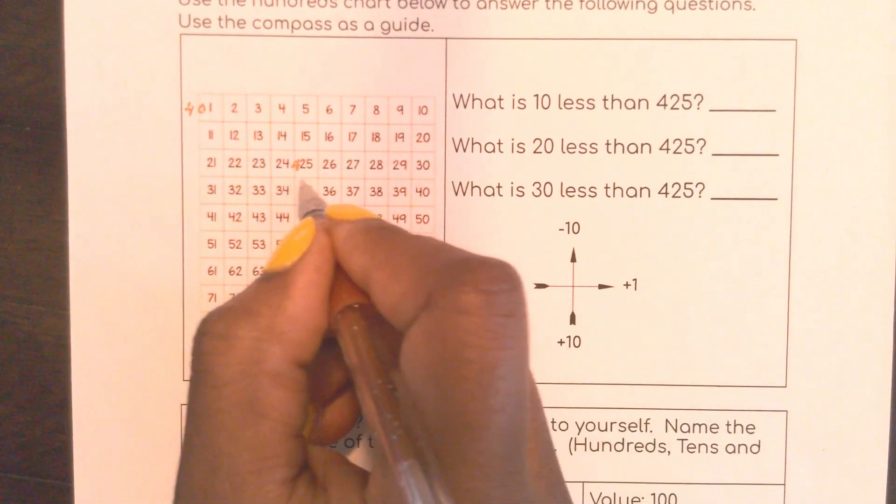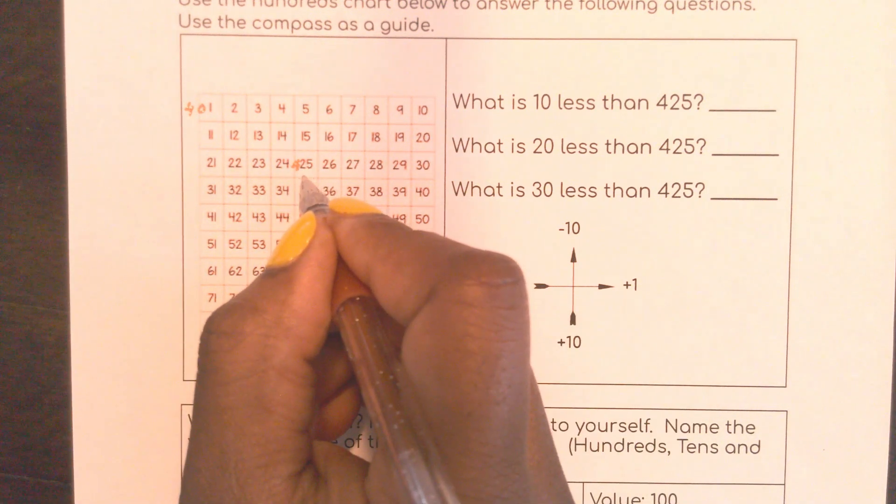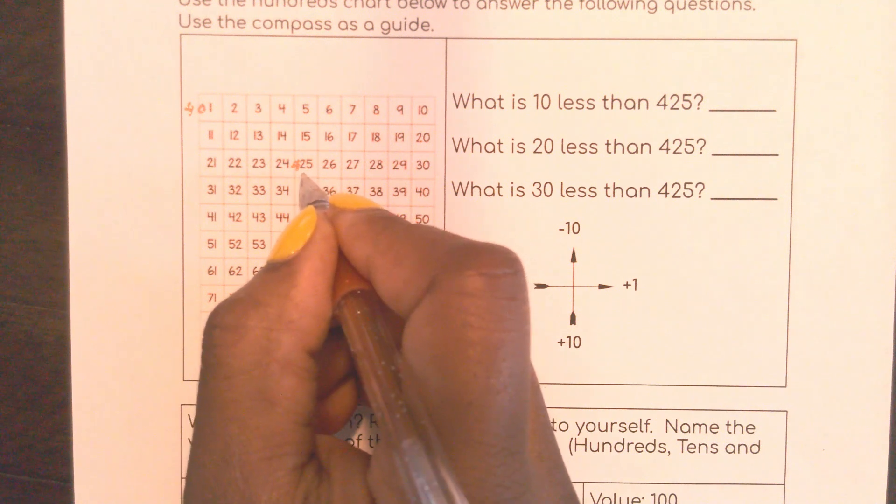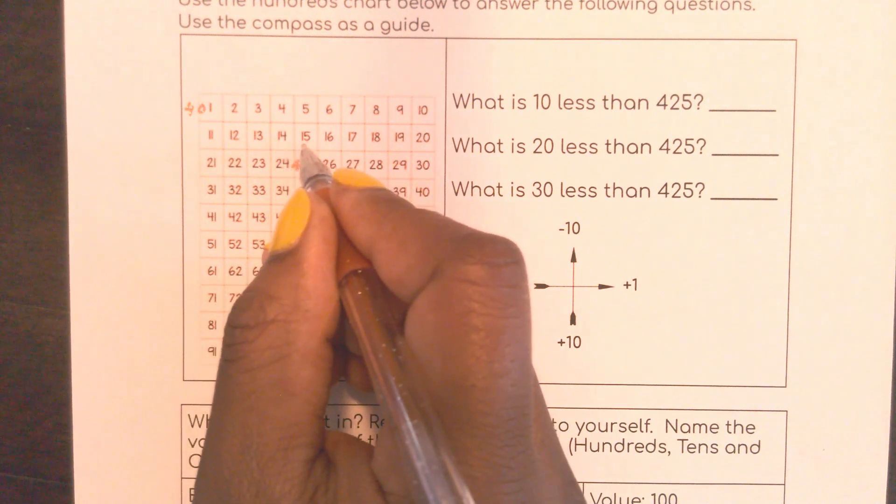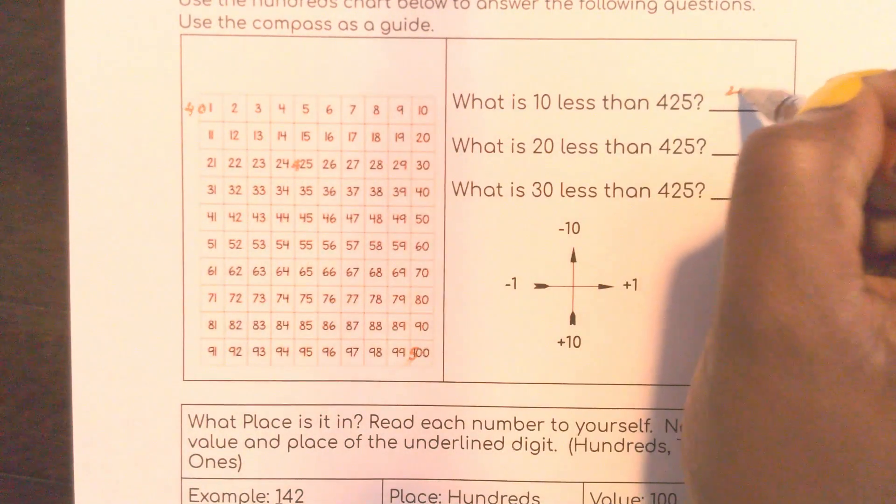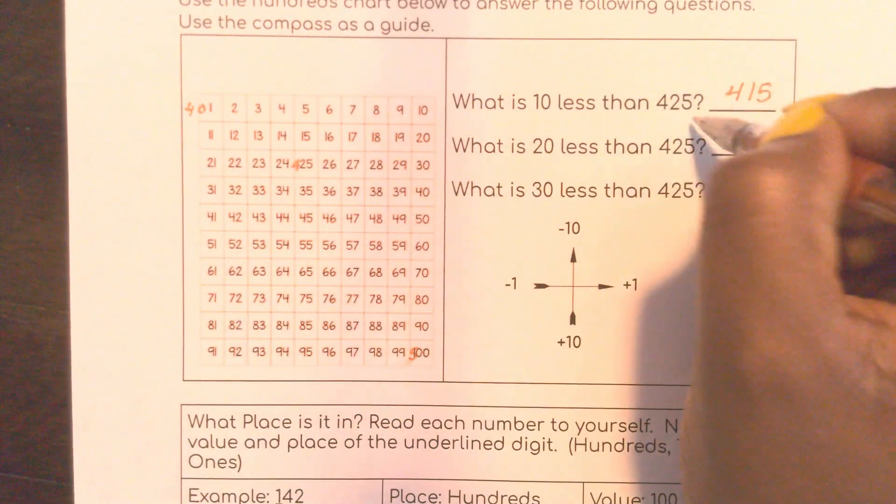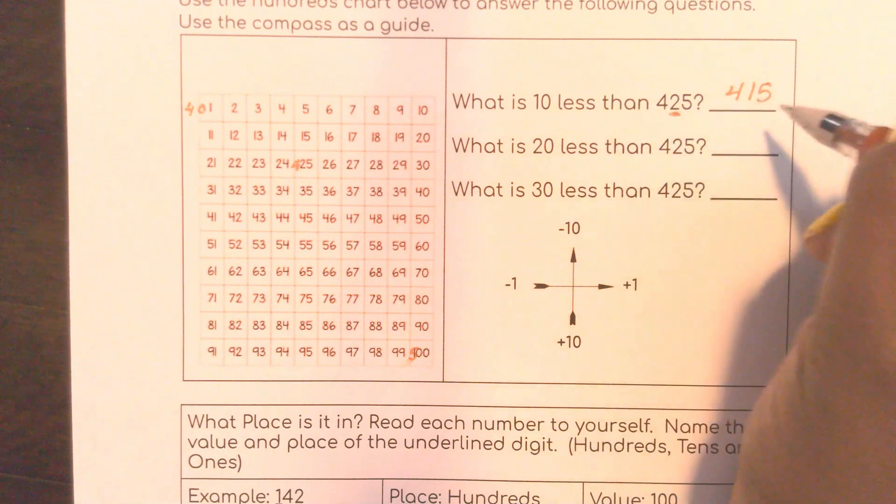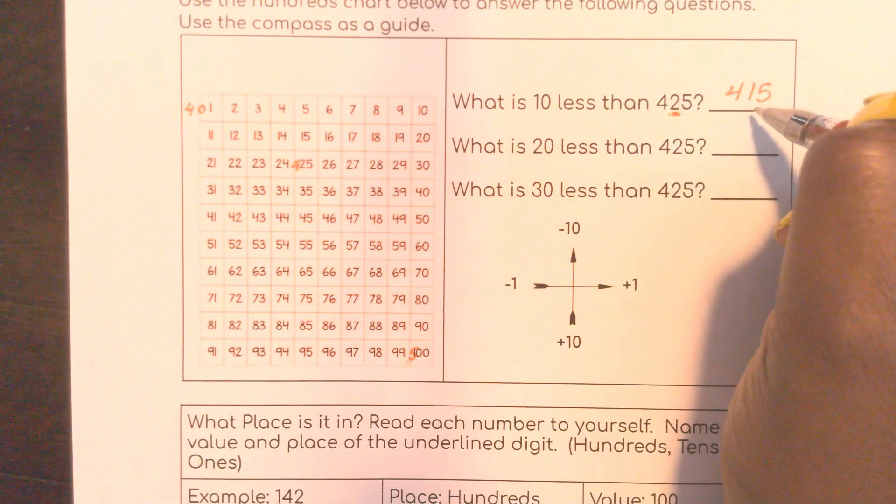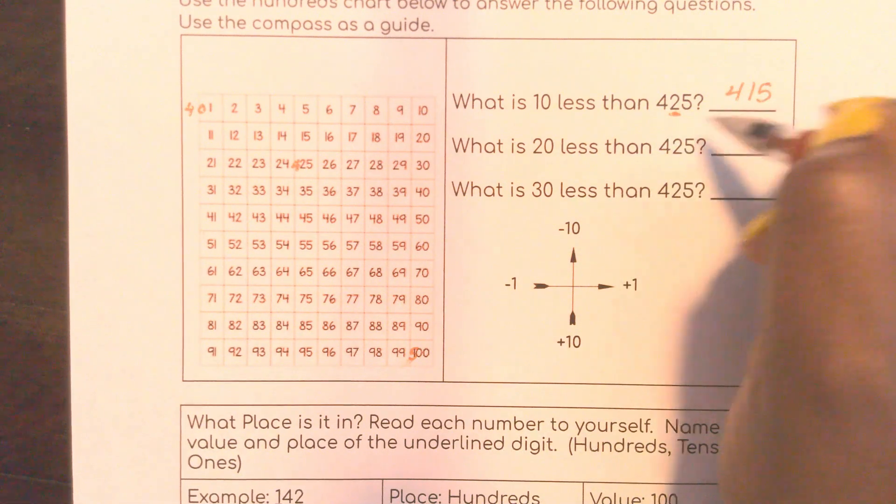So 425 would be right here. 10 less, I would go up. So that would be 415. And we can tell that 10 less, it would be a 1 in the tens place because here I have 2.